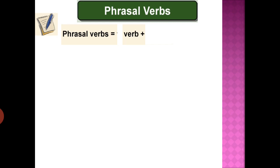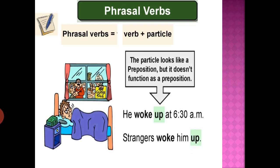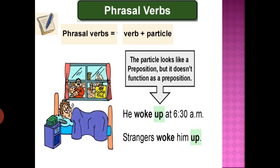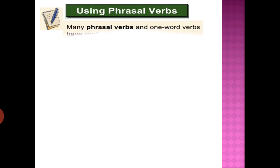Look at this example: 'He woke up at 6:30 AM' and 'Strangers woke him up.' In both sentences, the particle 'up' does not function like a standalone preposition but comes together with the verb as a phrasal verb, acting like a single verb. Now, how do we use these phrasal verbs? They can be used in place of one-word verbs.